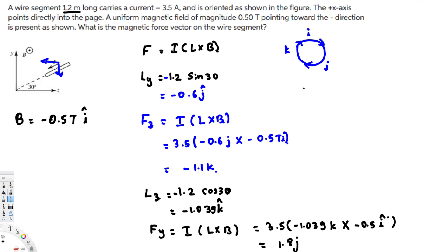The final answer for the magnetic force on the wire segment is F = 1.8 J minus 1.1 K newtons. I hope you guys find this video helpful, see you next time.